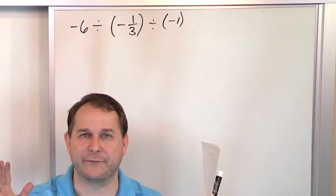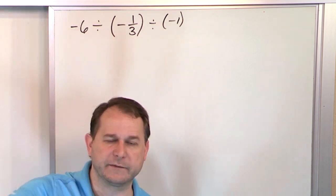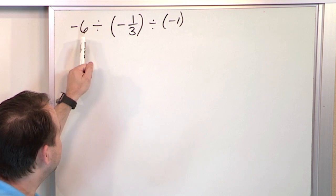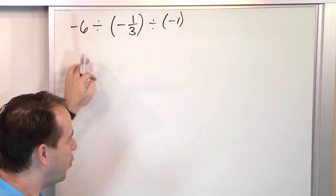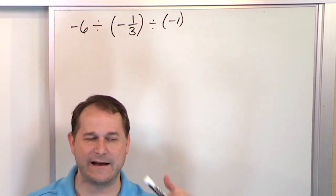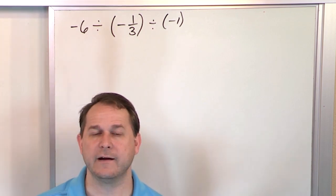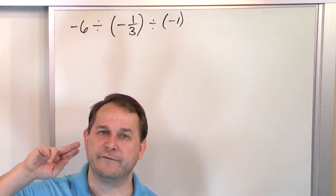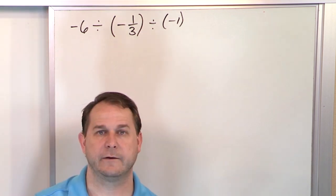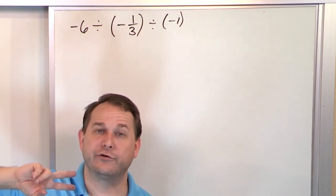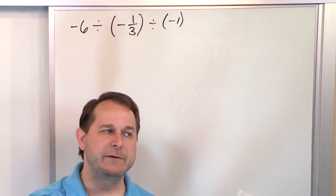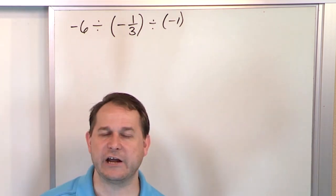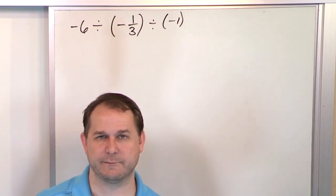When you multiply fractions, you multiply the tops and multiply the bottoms. But when you divide fractions — and in this case, 6 over 1 is a fraction too, because any number divided by 1 is a fraction — you have a fraction divided by a fraction. You change the division to multiplication, and you take the second fraction, the one you're dividing by, and flip it over. So every division problem with fractions always becomes multiplication.